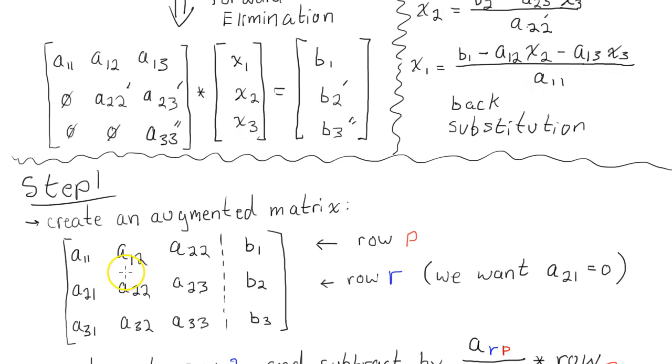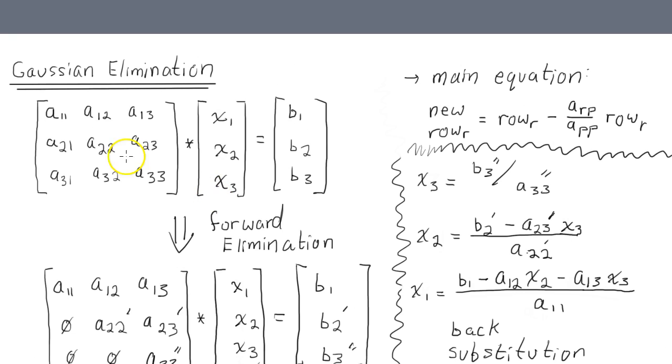So the first thing we'll want to do is create an augmented matrix. And all that is, is combining the A and the B matrix. Assuming that this is the A and this is the B matrix. This is because when we modify, start modifying these rows, which is what Gaussian elimination does.